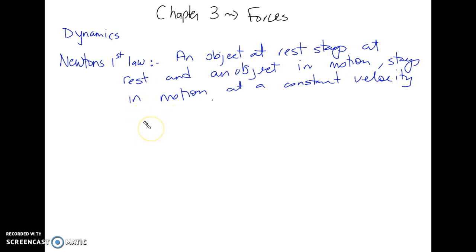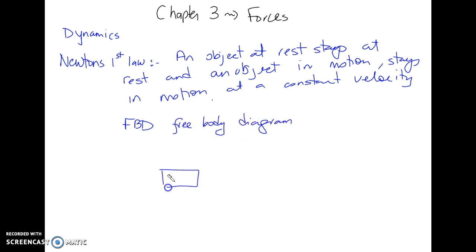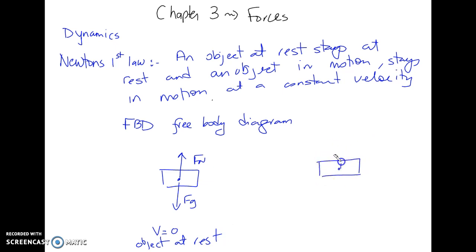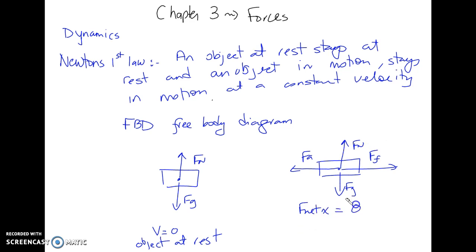All the forces on the object are equal to each other. We have an FBD — free body diagram. In this situation, if that object is at rest, then we have FN and FG. If an object is in motion, FN equals FG, and the net force equals zero. The object moves at constant velocity, V constant.